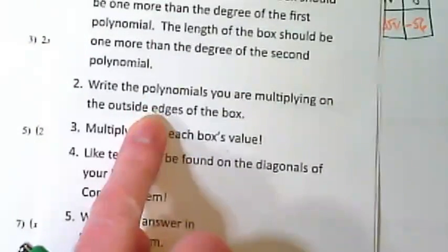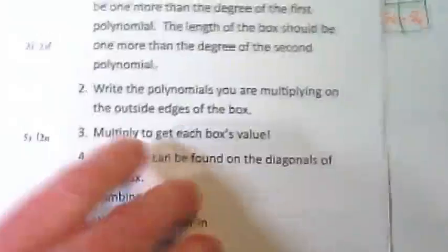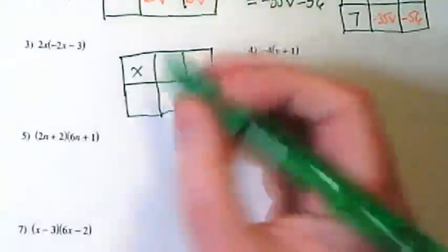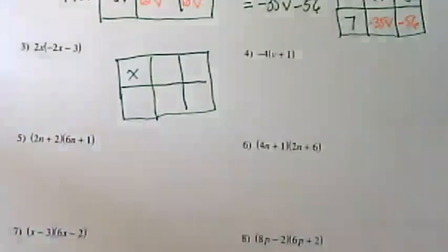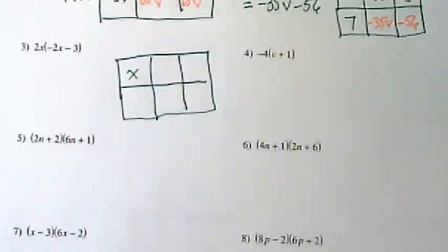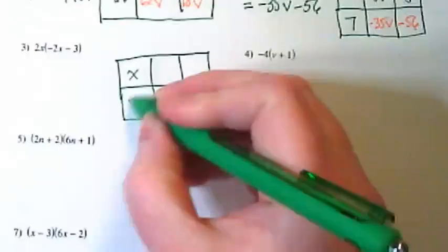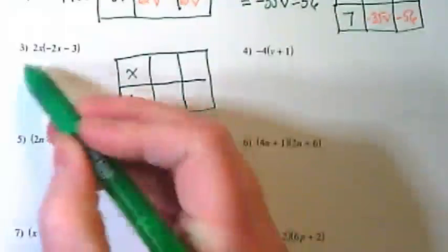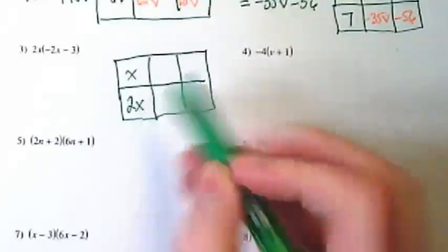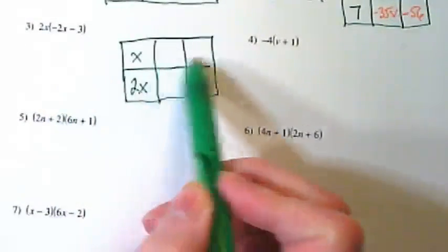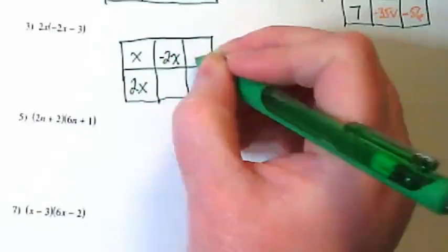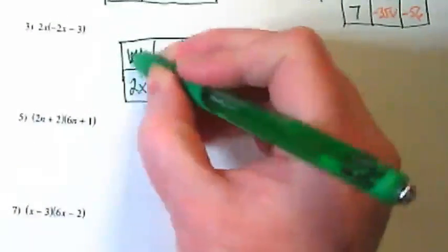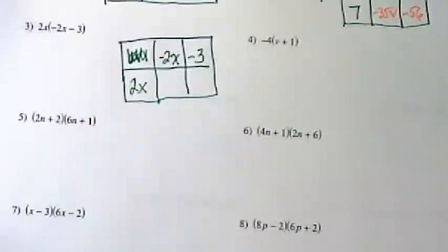We're going to fill in our polynomial on the outside edges of the box. So here we are going to put 2x because we're taking this monomial and putting it here, and then we're going to take what's in the parentheses and put it across the top. So negative 2x minus 3, and I'm going to cross that out so it doesn't look like it's part of the problem.